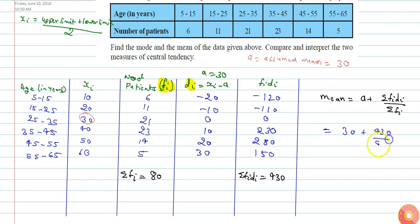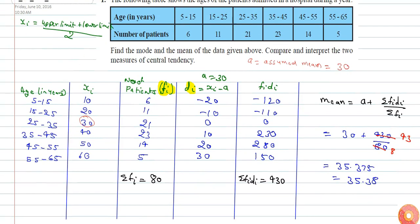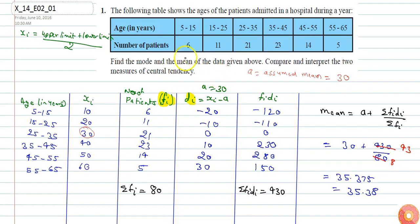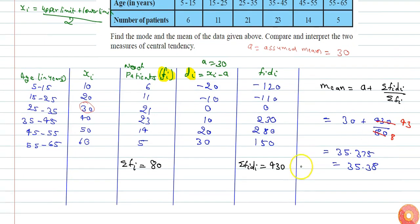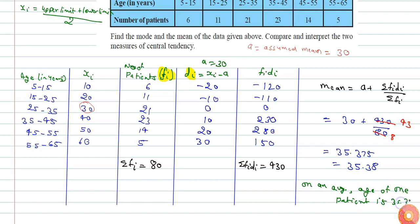So the mean equals A plus summation fi·di divided by summation fi, which is 30 plus 430 divided by 80. Solving this gives 35.375, or approximately 35.38. The meaning of the mean here is that on average, the age of one patient is 35.38 years.